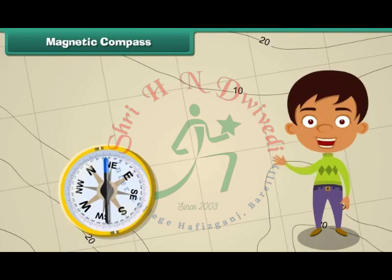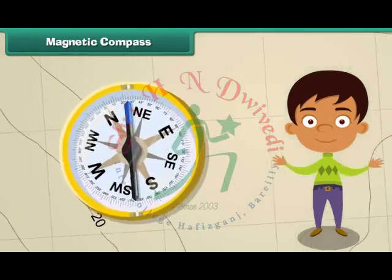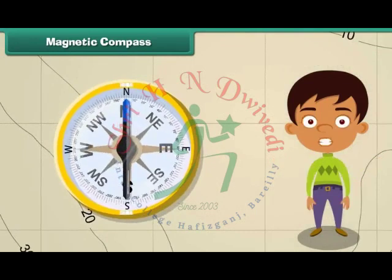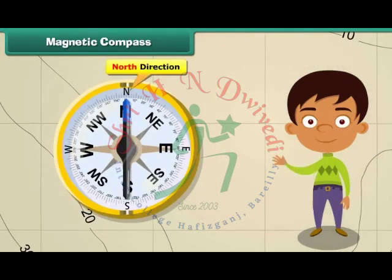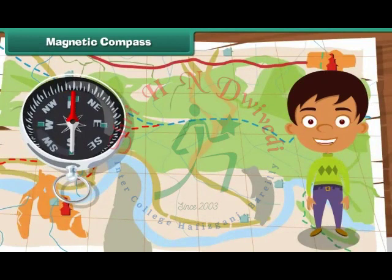A magnetic compass is a simple device which helps us to locate a place. It has a long needle. One end of the needle is marked N to represent the North direction. No matter where you are on Earth's surface, the needle of the magnetic compass will always point to the North direction. Thus, one can find all other directions in relation to North.